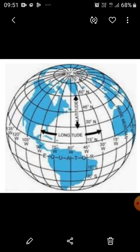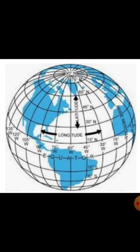We will see how the grid helps us through the intersection of latitudes and longitudes to locate a place. Latitude and longitude are imaginary lines traced on the surface of the Earth for the purpose of locating a specific place.